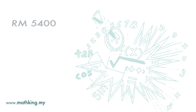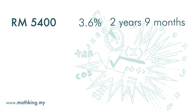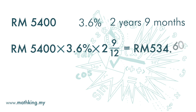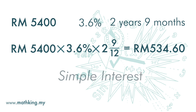So if the principal is 5,400, the interest rate is 3.6%, and the time period is 2 years 9 months, by the end of 2 years and 9 months, what we get is: 5,400 times 3.6% times 2 years and 9 months over 12 months. And we get RM534.60. This is the calculation of simple interest.